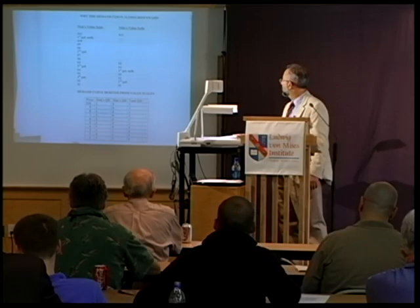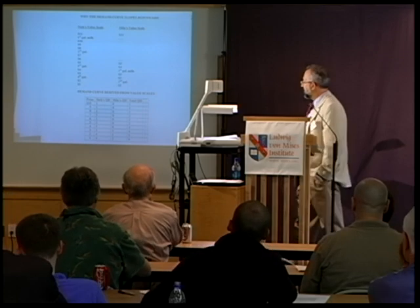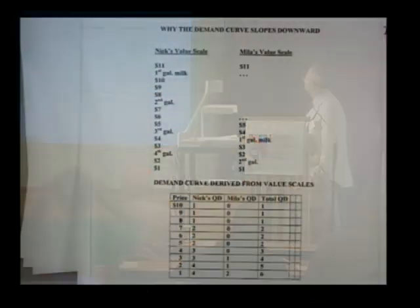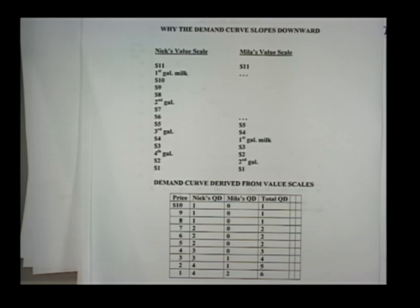Let's say the price of milk starts out at $10. At $10, Nick would only buy one gallon, because he values $10 above the second and third gallon, which have lower value. Mila would not buy a gallon of milk at $10. But as prices drop, the law of marginal utility kicks in — the second gallon, which has a lower value to Nick, once the price falls to $7, he'll buy two gallons because he values the second one above $7.